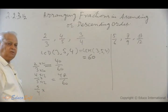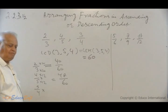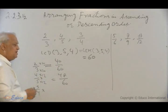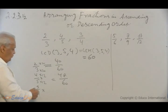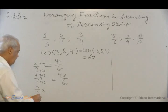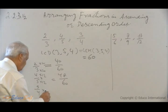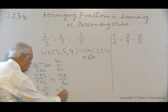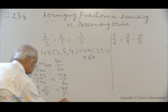Similarly, the last one, 3/4. Common denominator is 60. So 4 times what will make it 60? 15. So you will have 15 by 15. This will be equal to 45 over 60.